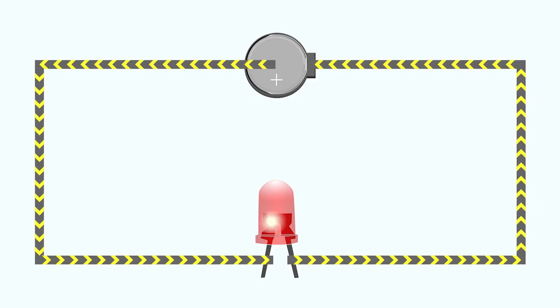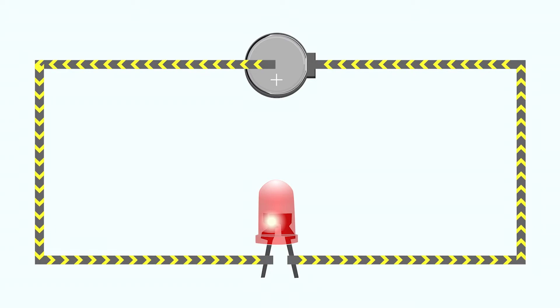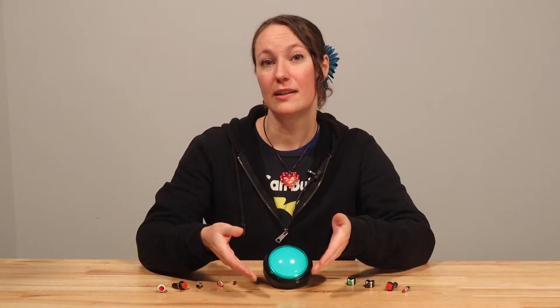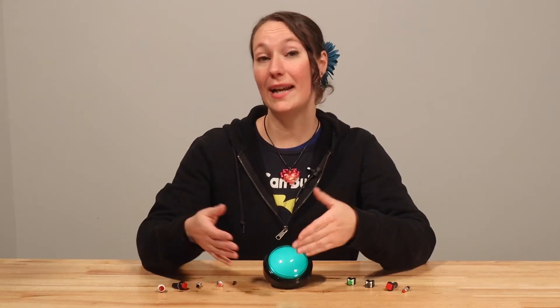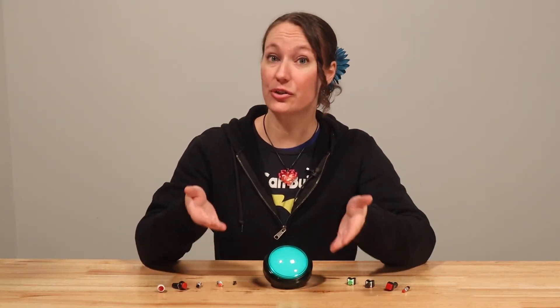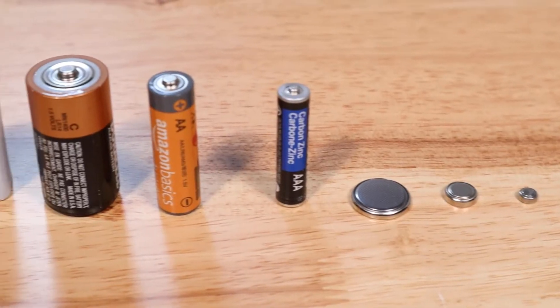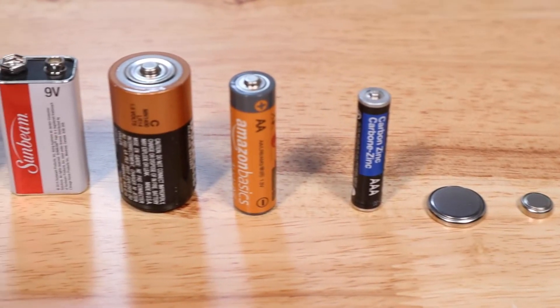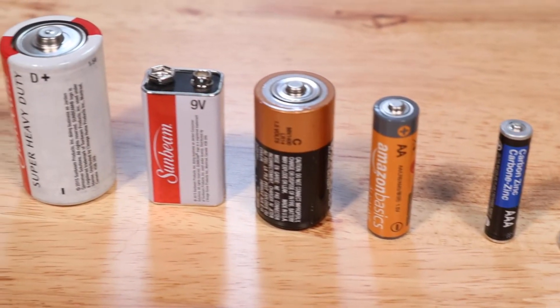In a circuit, electricity flows in a circle. To power our circuits, we need a power source. In small projects, we use batteries as our power source.